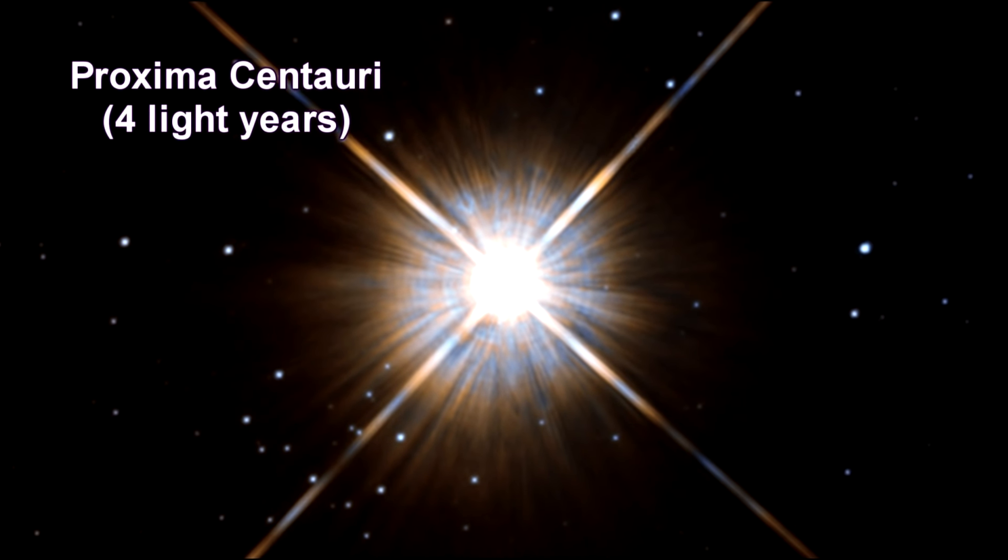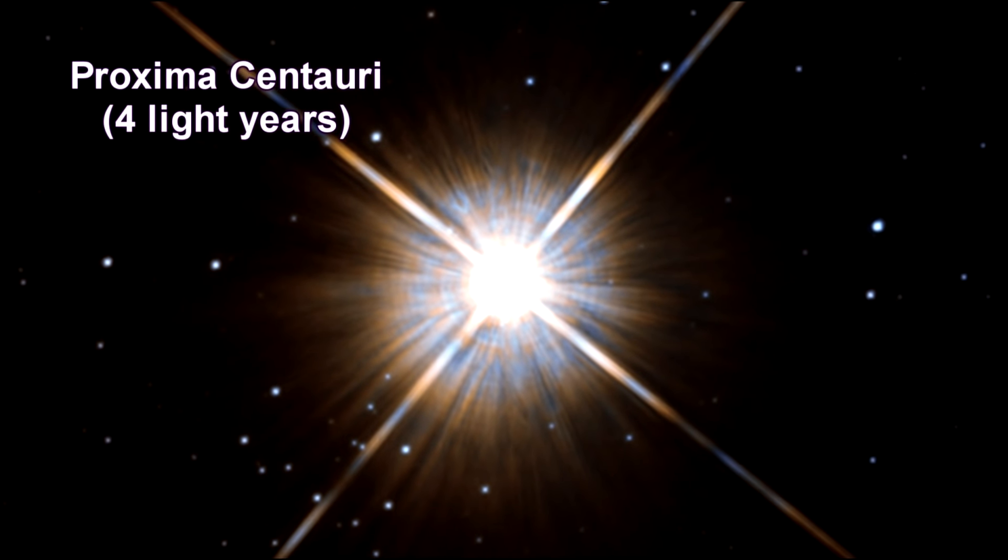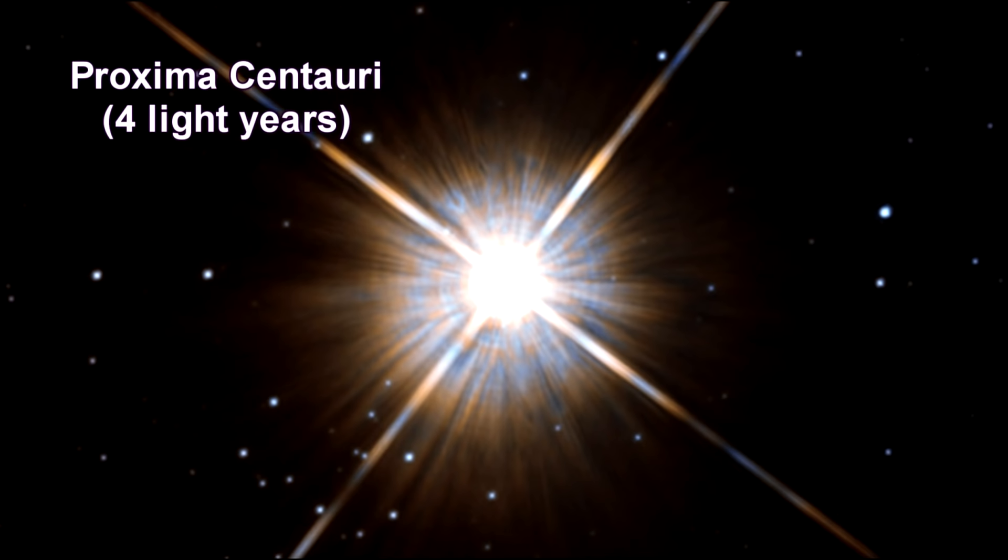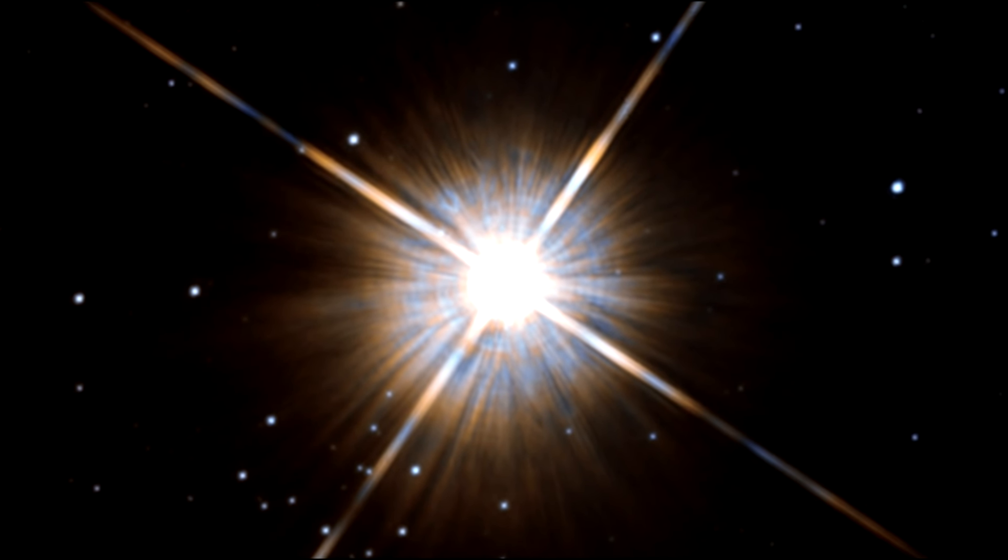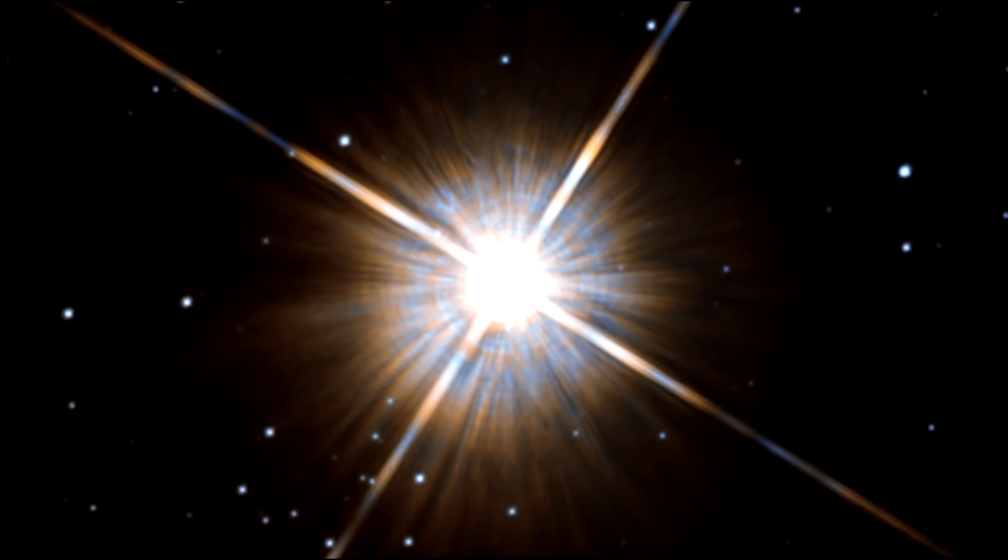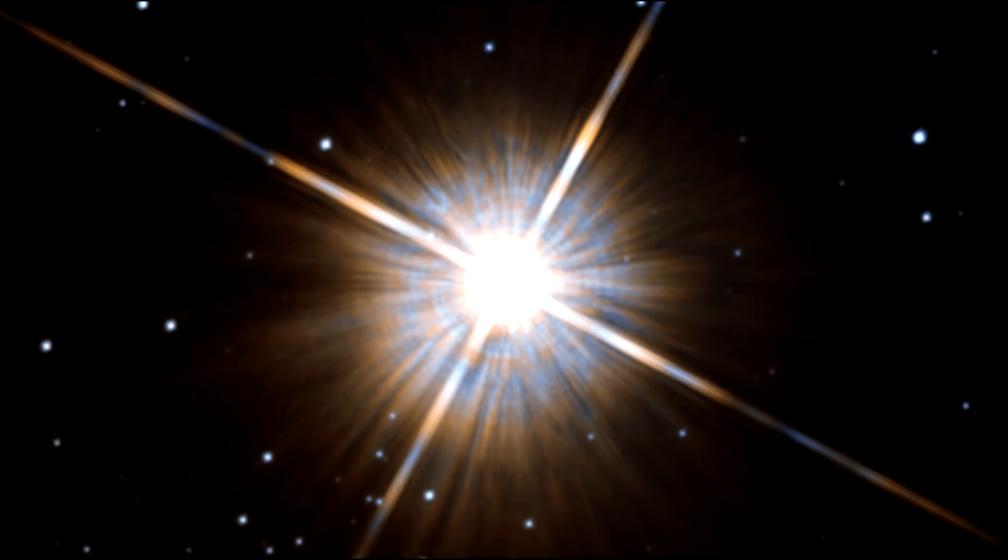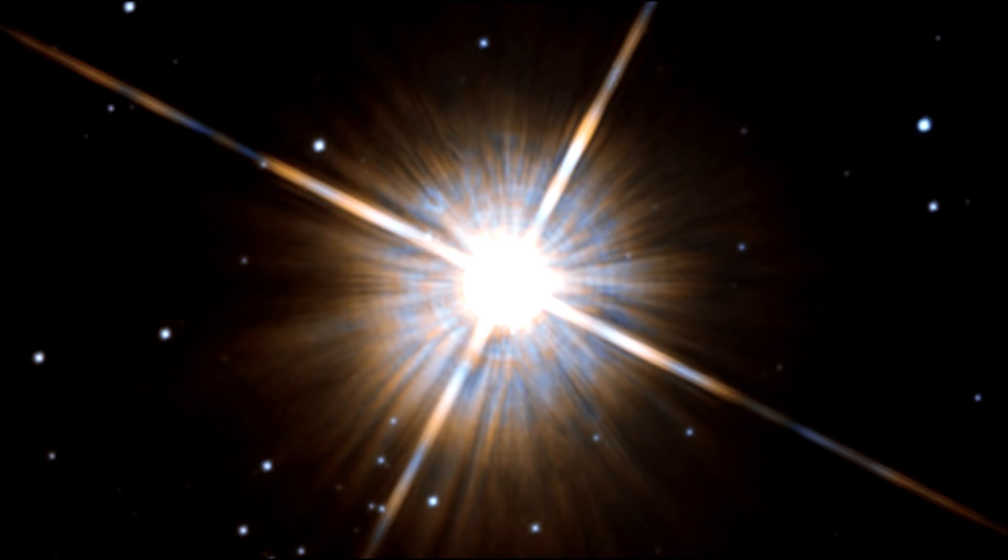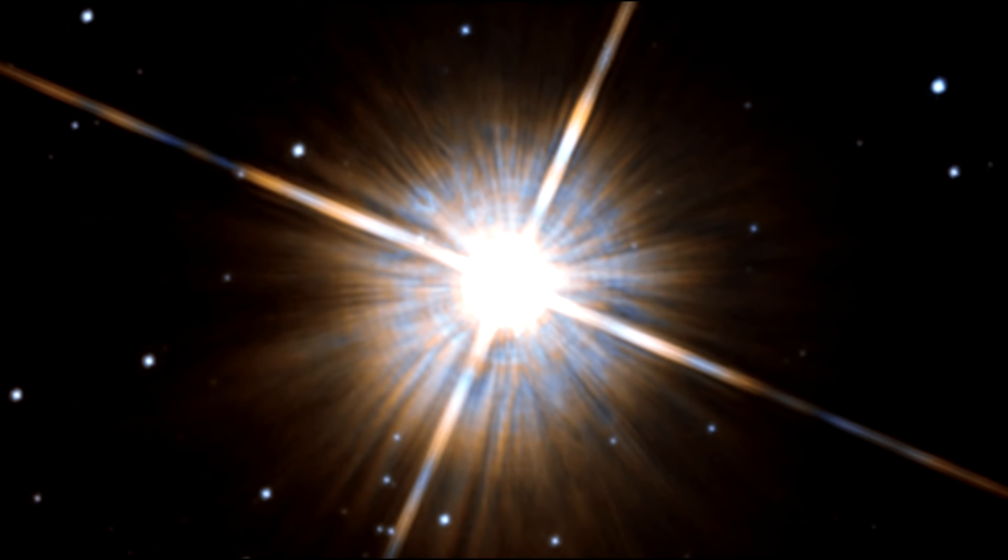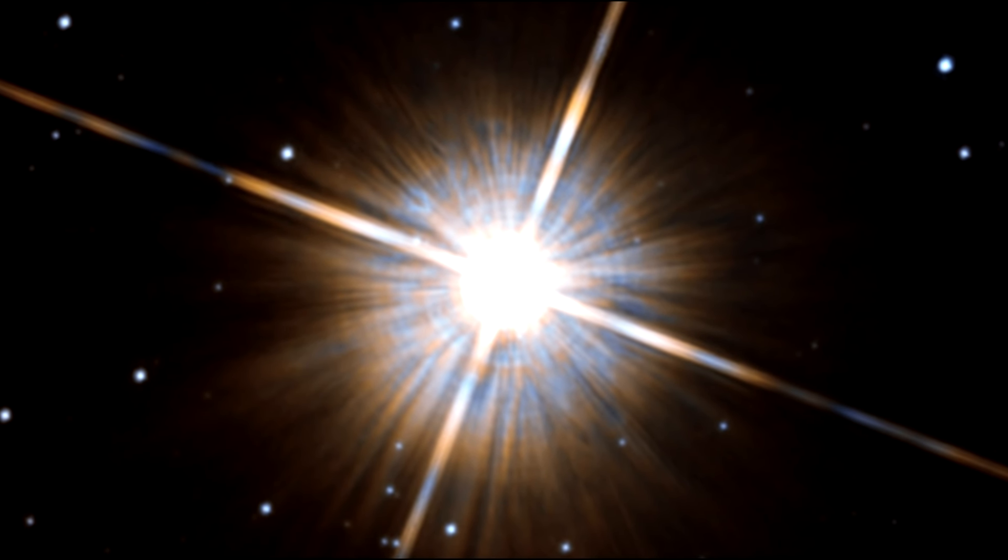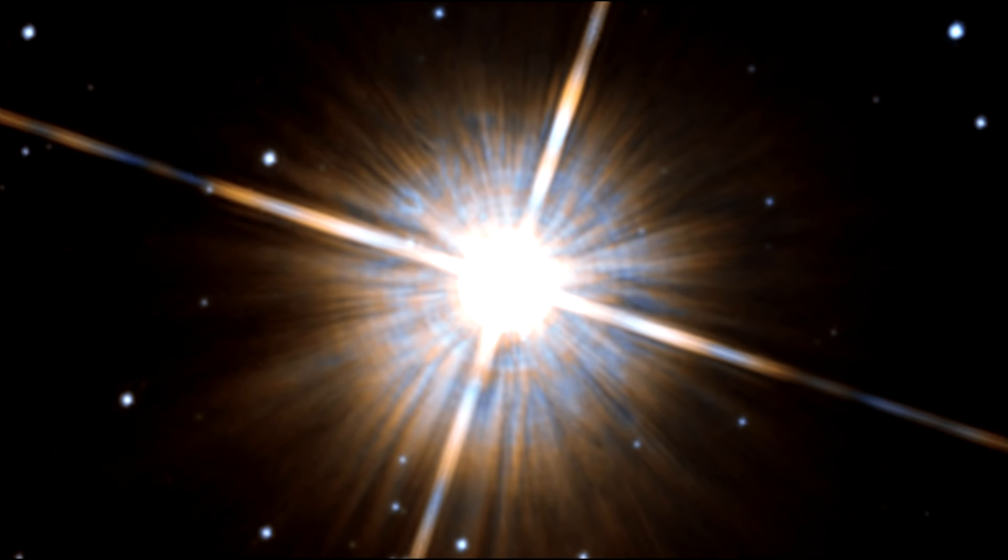In our segment on nearby stars, we covered our closest neighbor, Proxima Centauri. Here's a recent photo of the star taken by Hubble. Although it looks bright through the eye of Hubble, Proxima Centauri is not visible to the naked eye. Its average luminosity is very low and it is quite small compared to other stars at only about one-eighth the mass of the sun. Proxima Centauri is in for a long, long life. Astronomers predict that this star will remain a main-sequence star for another four trillion years, a thousand times longer than our sun.